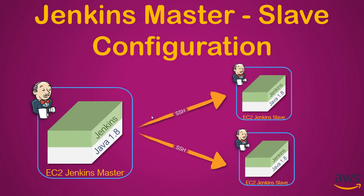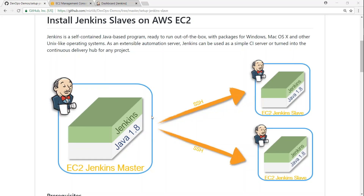In today's video, I'm going to show you how you can add slaves to your Jenkins master. Let's say you have a Jenkins master and it is not able to handle all the workloads, or you want to run certain jobs on another machine — then you need a Jenkins slave. We'll see how you can add multiple slave nodes, label them, and make sure certain jobs run on certain slave nodes only.